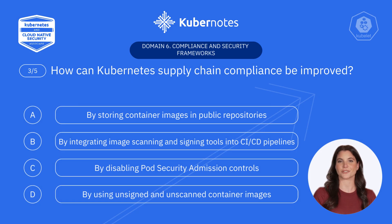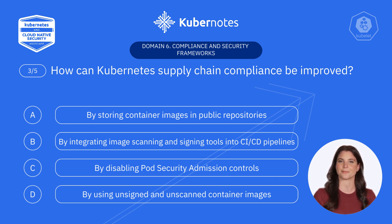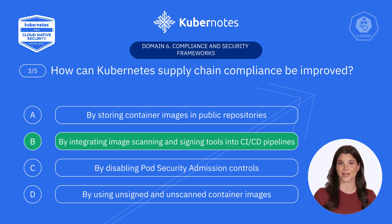Here comes question three. How can Kubernetes supply chain compliance be improved? A, by storing container images in public repositories. B, by integrating image scanning and signing tools into CI-CD pipelines. C, by disabling pod security admission controls. D, by using unsigned and unscanned container images. Correct, it's B, by integrating image scanning and signing tools into CI-CD pipelines. Automating image scanning ensures that only secure and compliant container images are deployed.